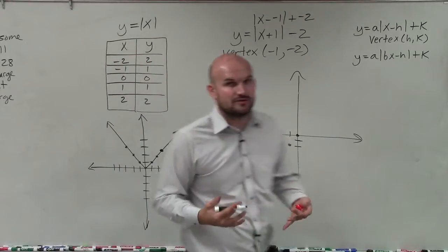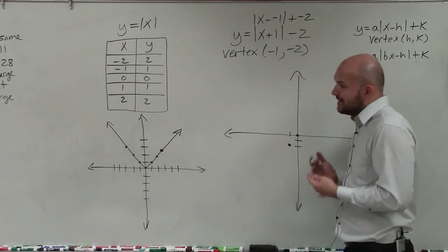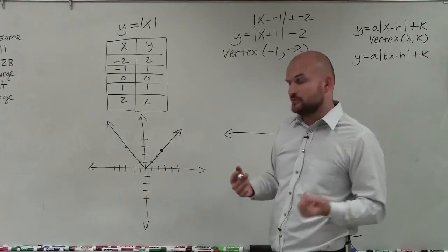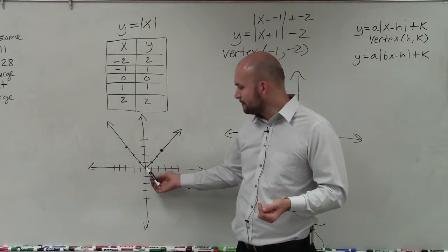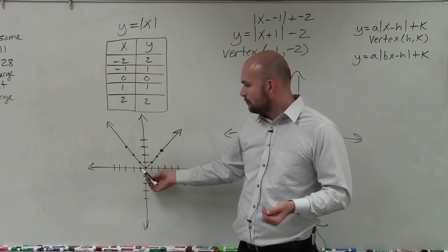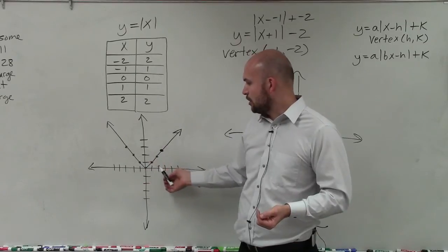Now to graph the rest of the function, I need to understand what is the relationship between all the points. And basically to go from every point, I go over one, up one, over one, up one, over two, up two, over two, up two.